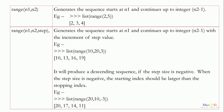The same three-parameter range method can also produce a descending sequence of integers if the step size is negative. When the step size is negative, the starting index should be larger than the stopping index, meaning n1 should be greater than n2. For example, list(range(20, 10, -3)) produces integers starting from 20, reducing by 3 each time: 20, 17, 14, and 11.